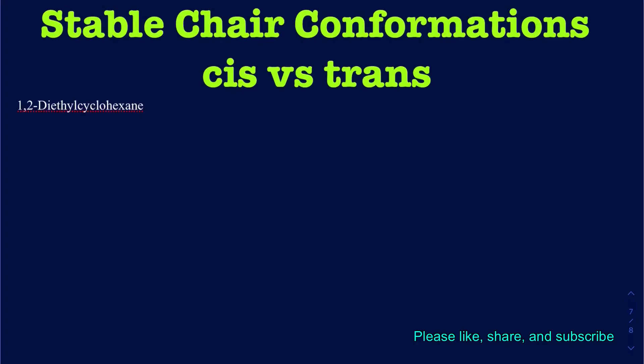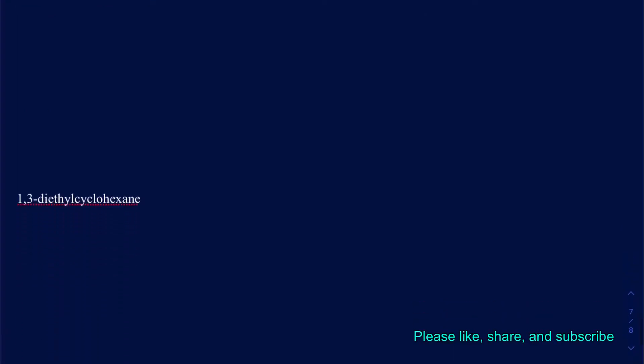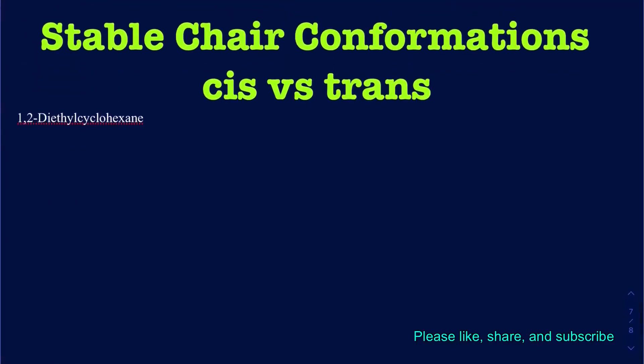Hello everyone. In this video we're going to be comparing the stability of cis and trans cyclohexane rings when you have substituents attached to them. It's all based on how many equatorial and how many axial positions you really get.